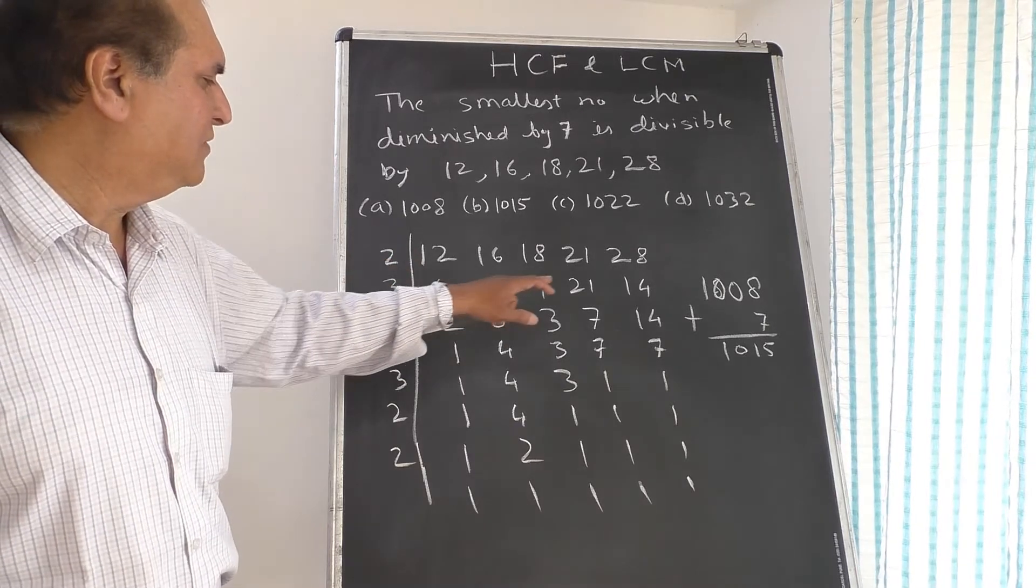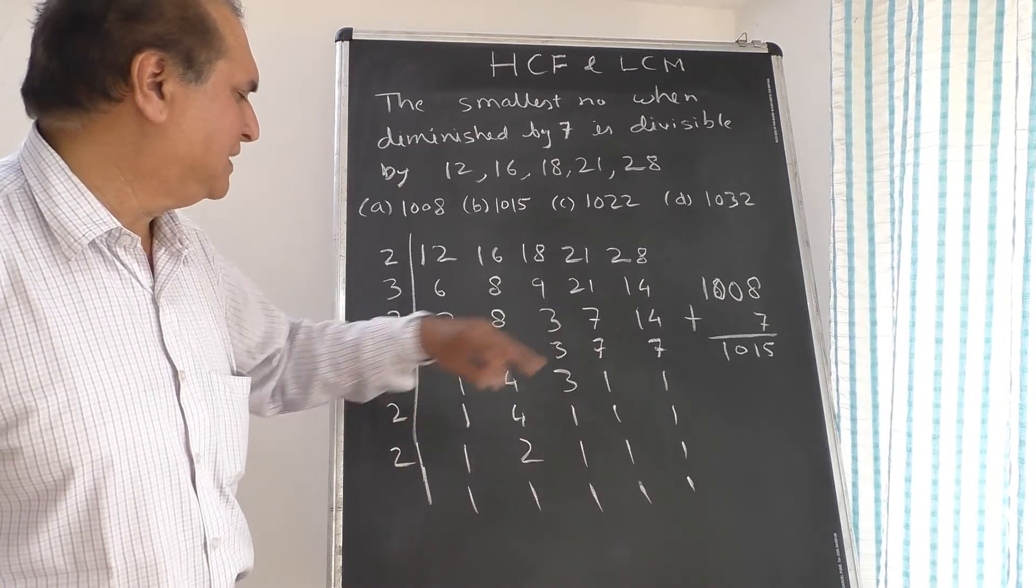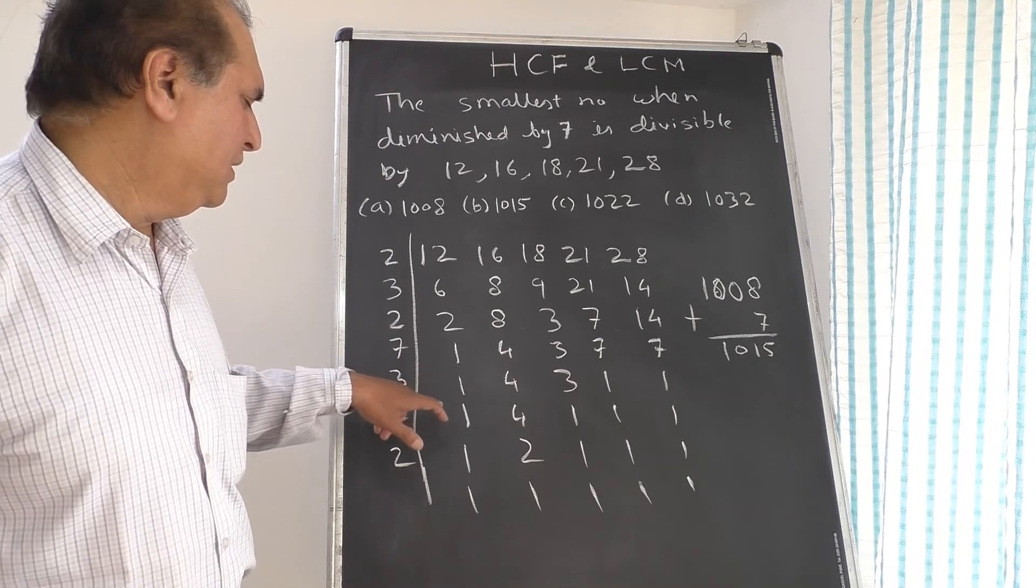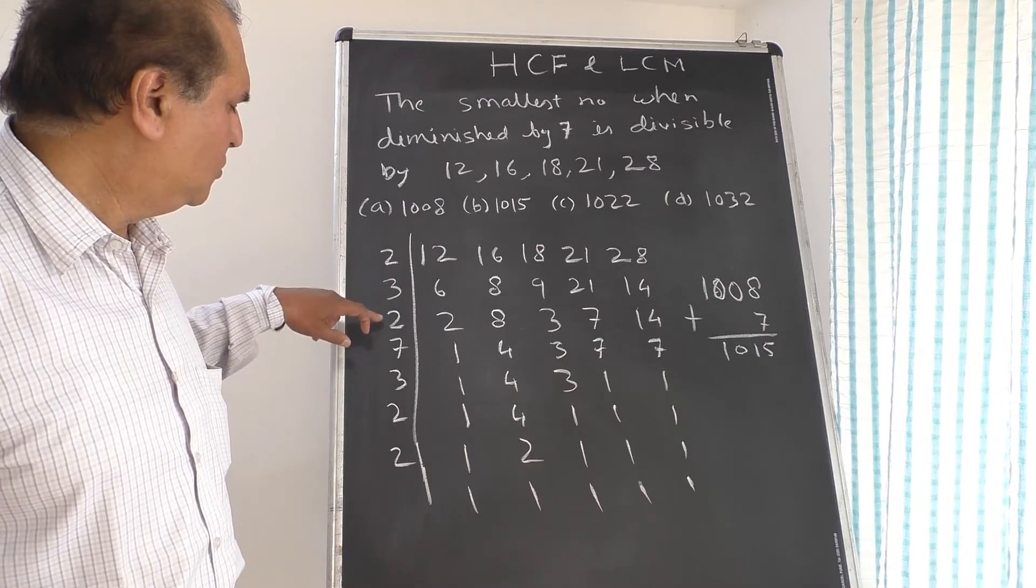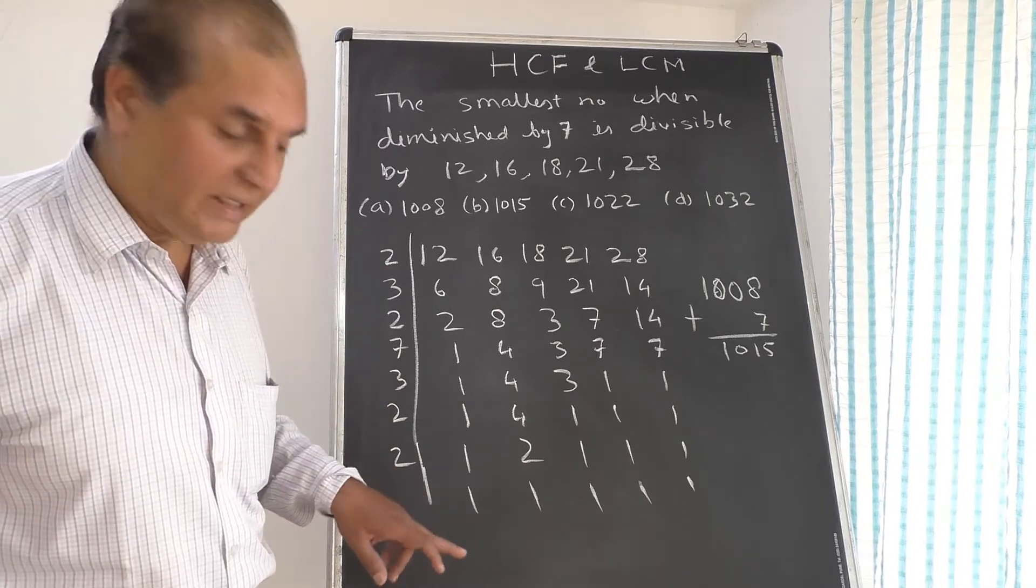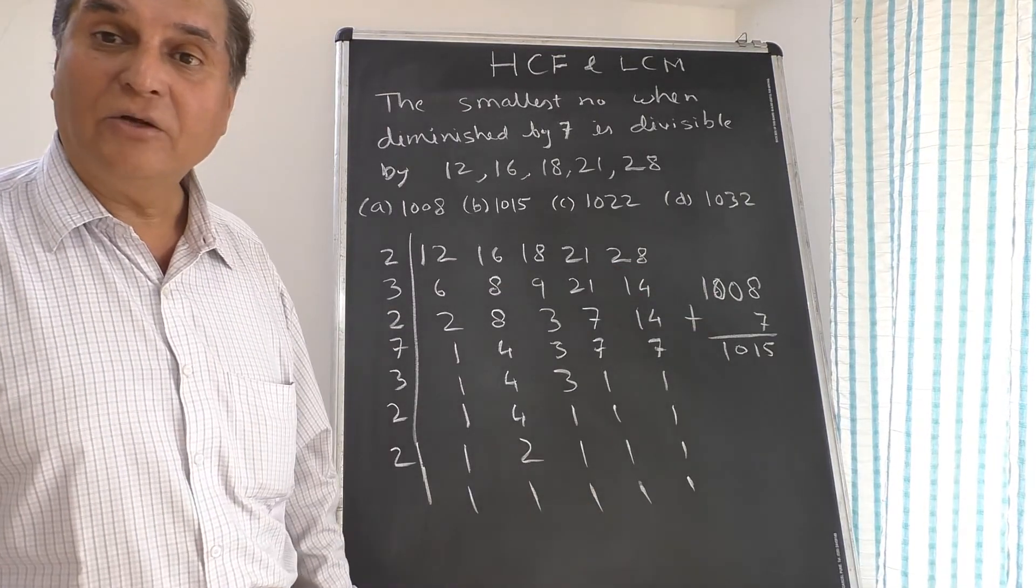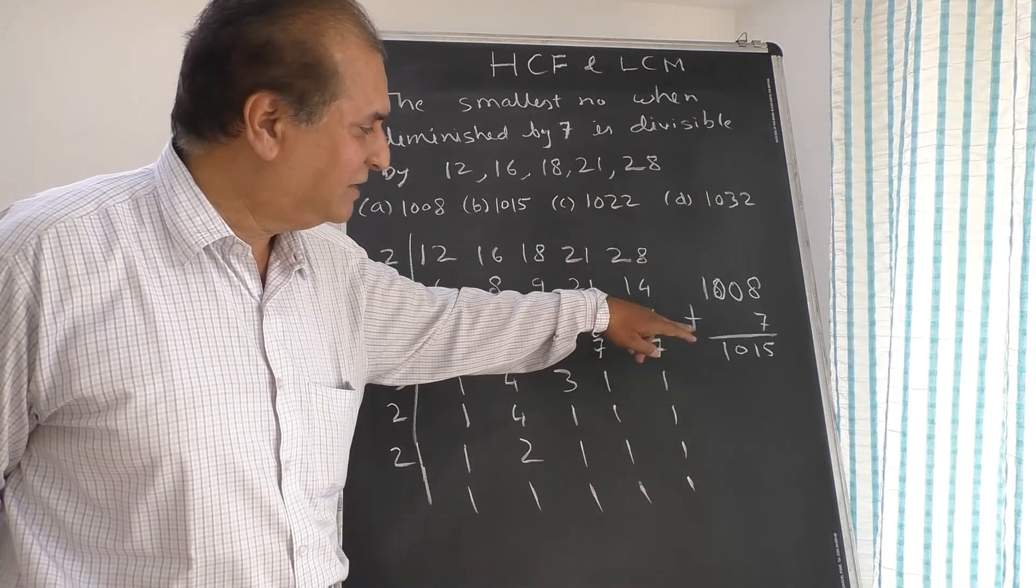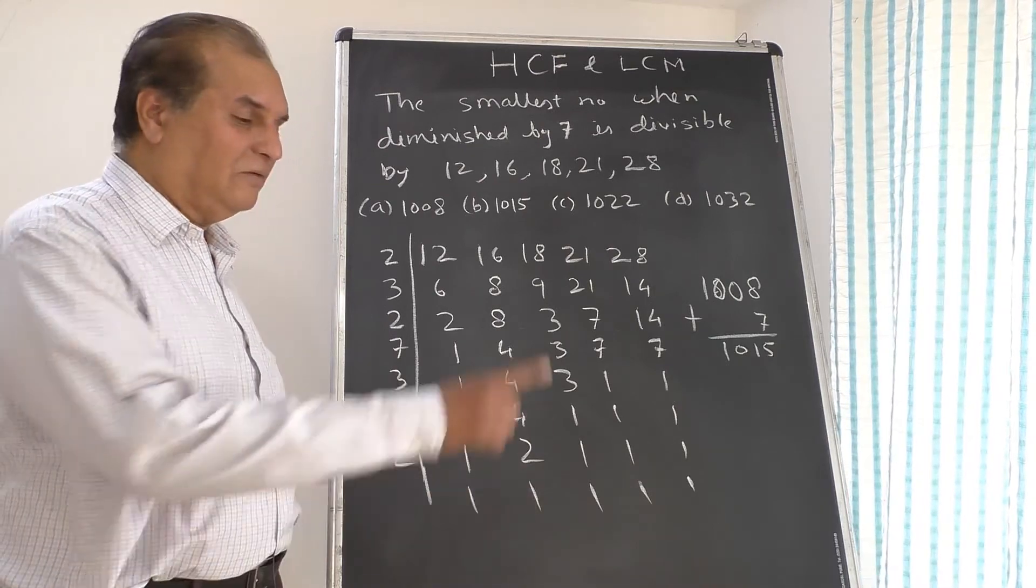First we'll cut by 2: 6, 8, 9, 21, 14. By 3 again: 2, 8, 3, 7, 14. Again by 2: 1, 4, 3, 7, 7. Again by 7: 1, 4, 3, 1, 1. Again by 3: 1, 4, 1, 1, 1. Then by 2 twice because only 1, 4 is there. Now multiplication: 2 into 3 into 2 into 7 into 3 into 2 into 2. All the multiplication will give you LCM, provided there should be 1 at the end everywhere. This multiplication is 1008. You have to do this very fast with less time in hand. Now in that LCM we will just add 7, we'll get 1015. Understanding? 1015. The answer is B.